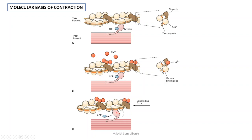The interaction of actin with tropomyosin and its conformation is under the control of a protein called troponin. There are three subunits of this troponin protein: troponin C, troponin T, and troponin I.